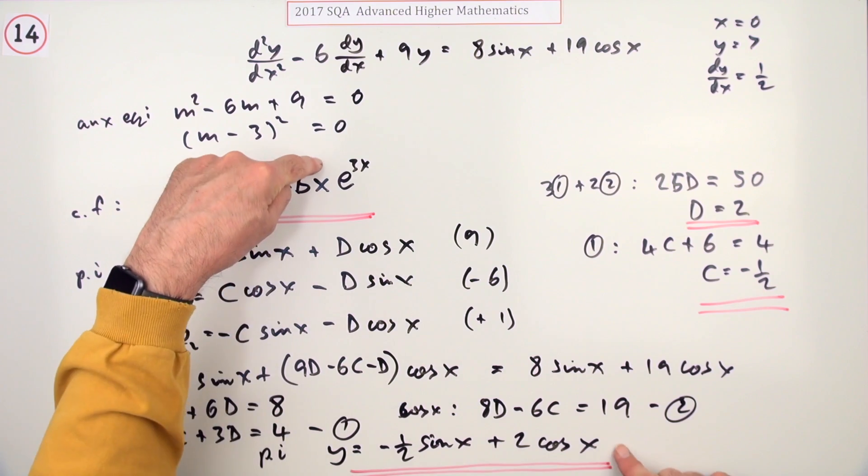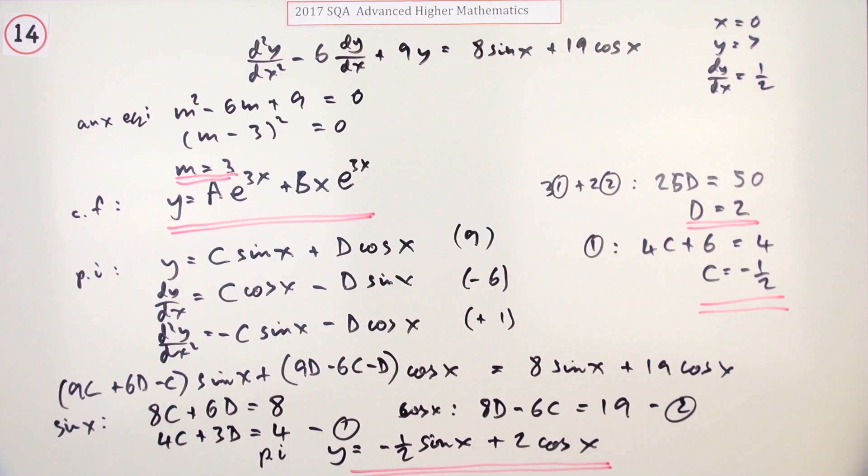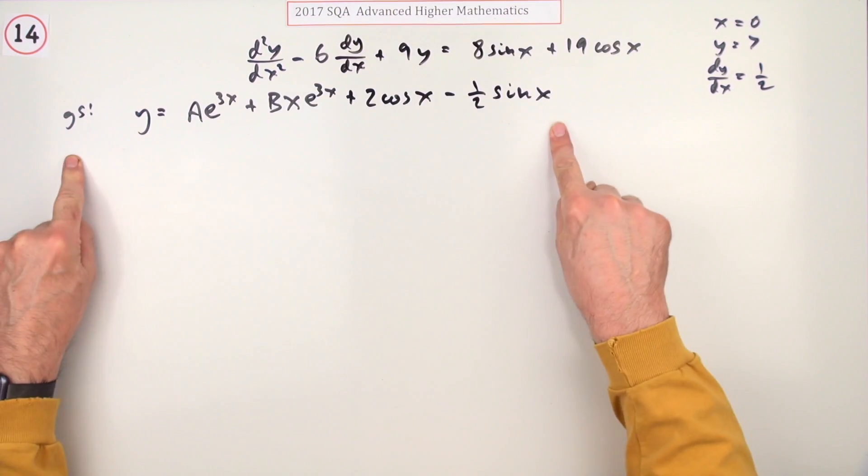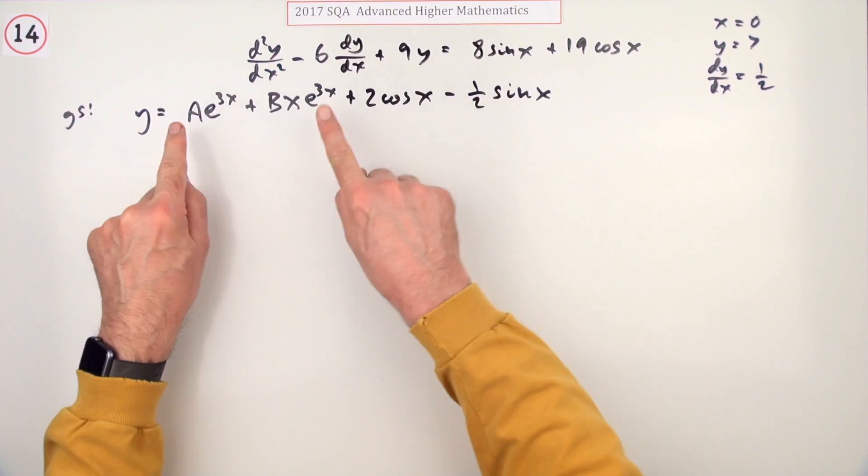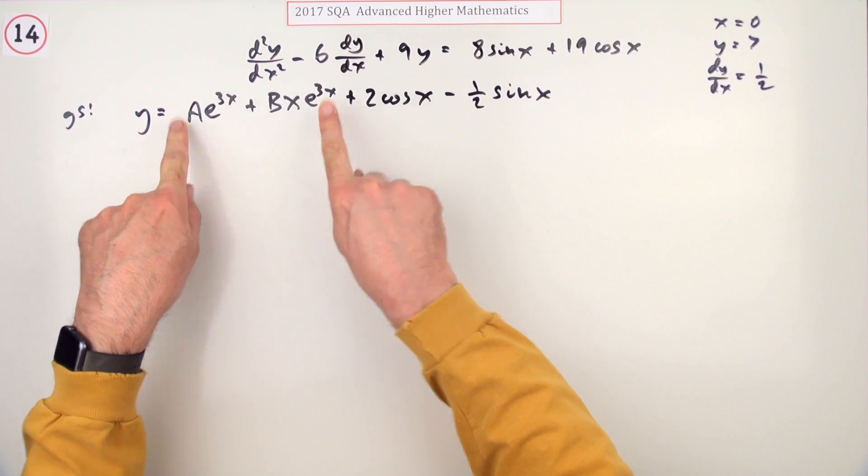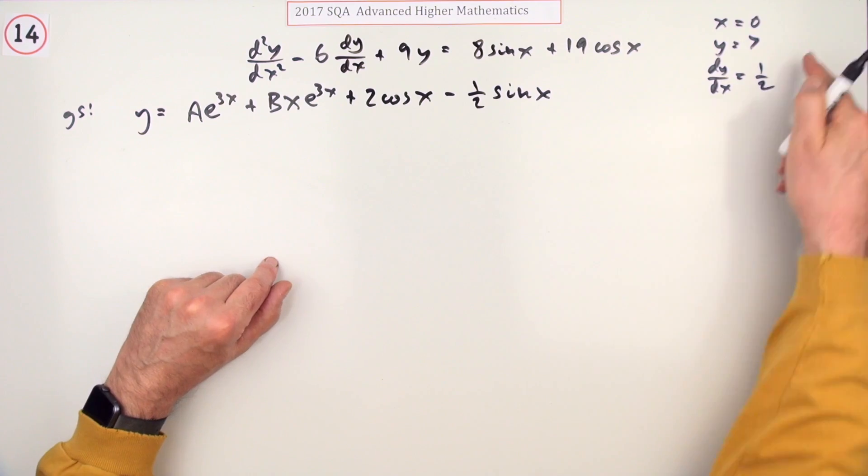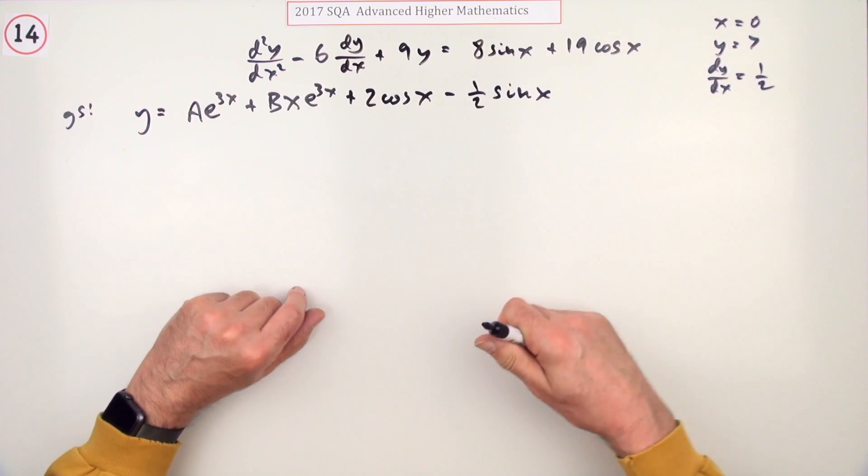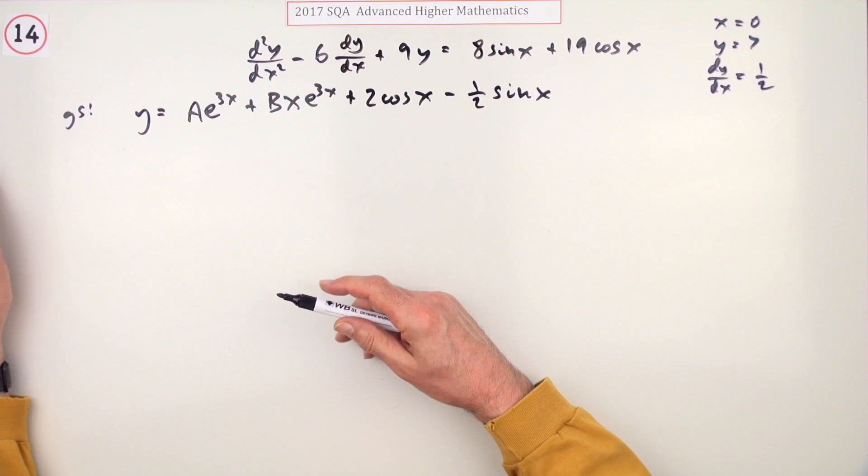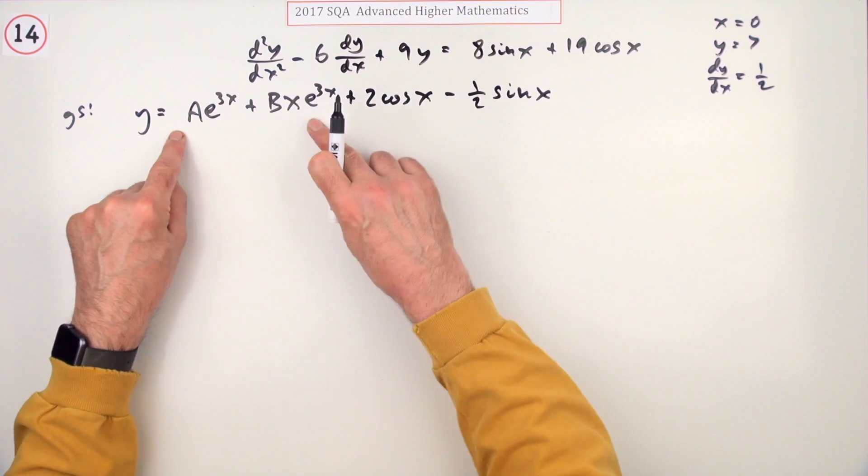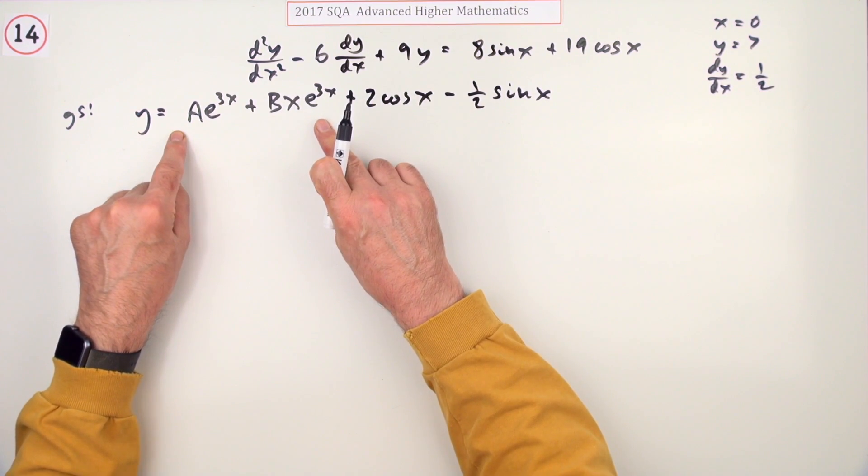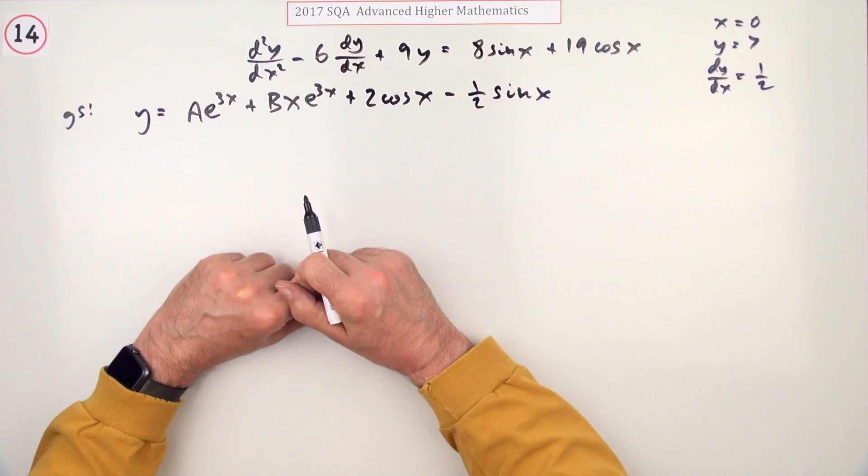Now you have to put these two parts together to get the general solution. The general solution is made up of the two parts: the complementary function and the particular integral. To get the particular solution you need to put in the initial values.